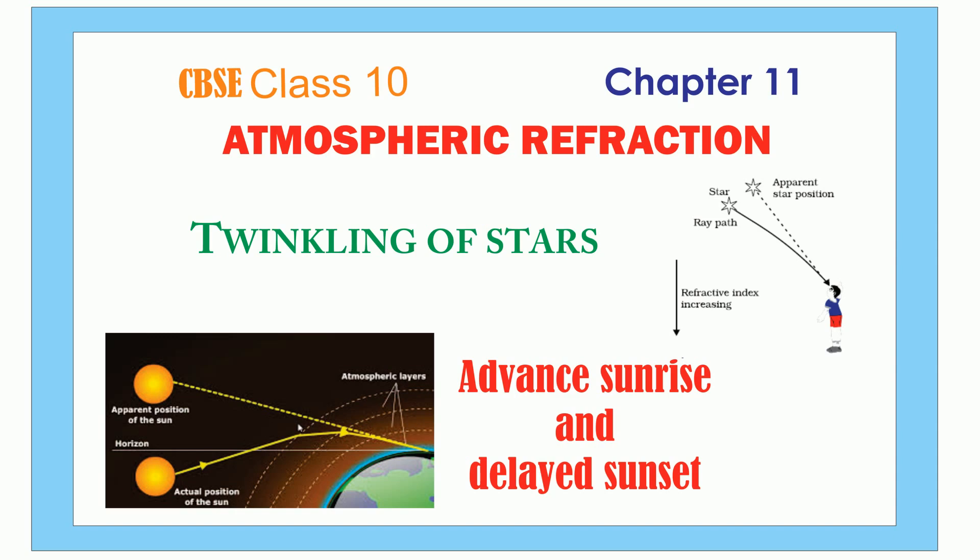The atmosphere has different layers with different temperatures, gases, and densities. As light travels from one layer to another, the difference in density and temperature causes the direction of sunlight to change. This process is called atmospheric refraction, and it is responsible for phenomena like the twinkling of stars, advanced sunrise, and delayed sunset.